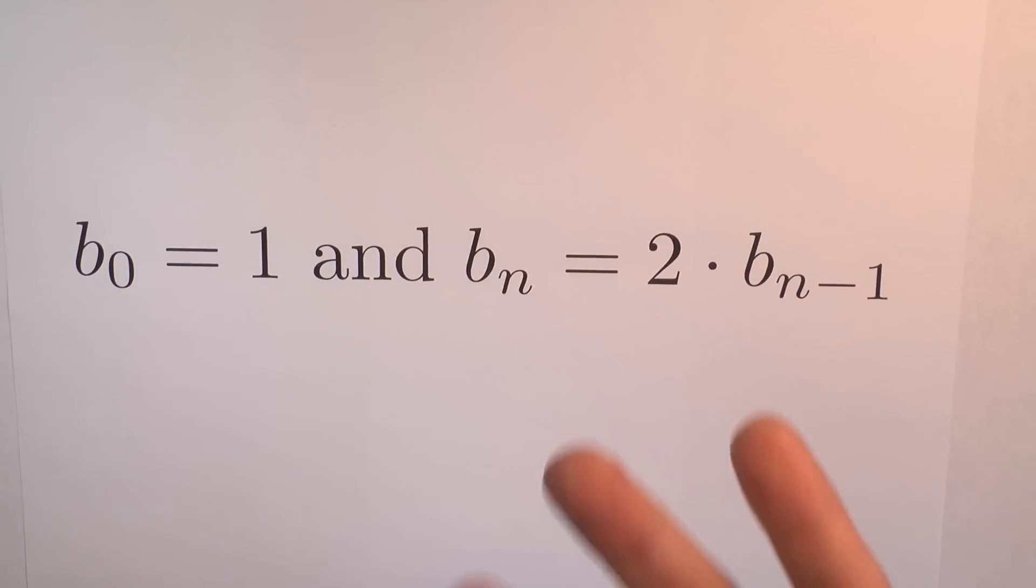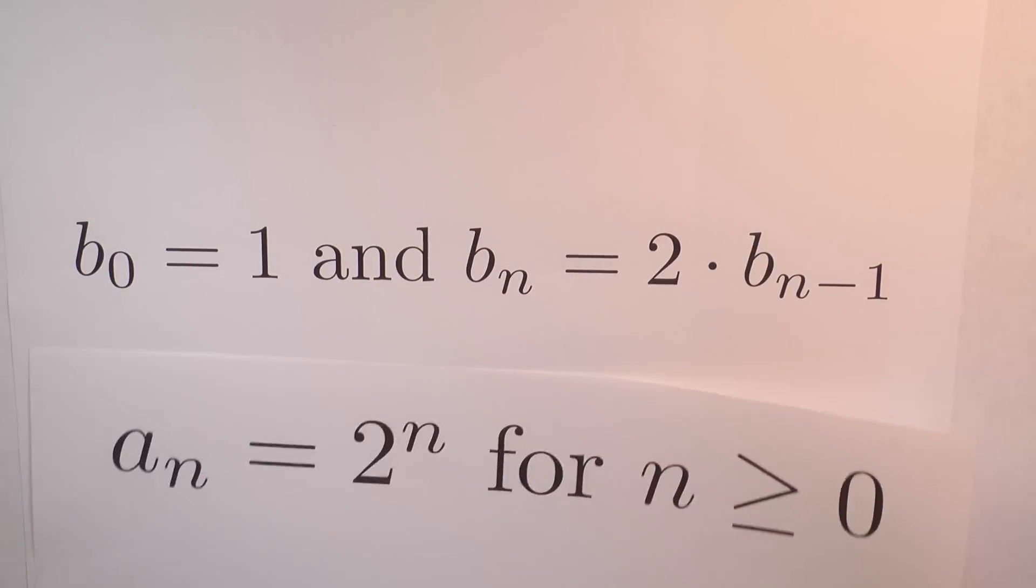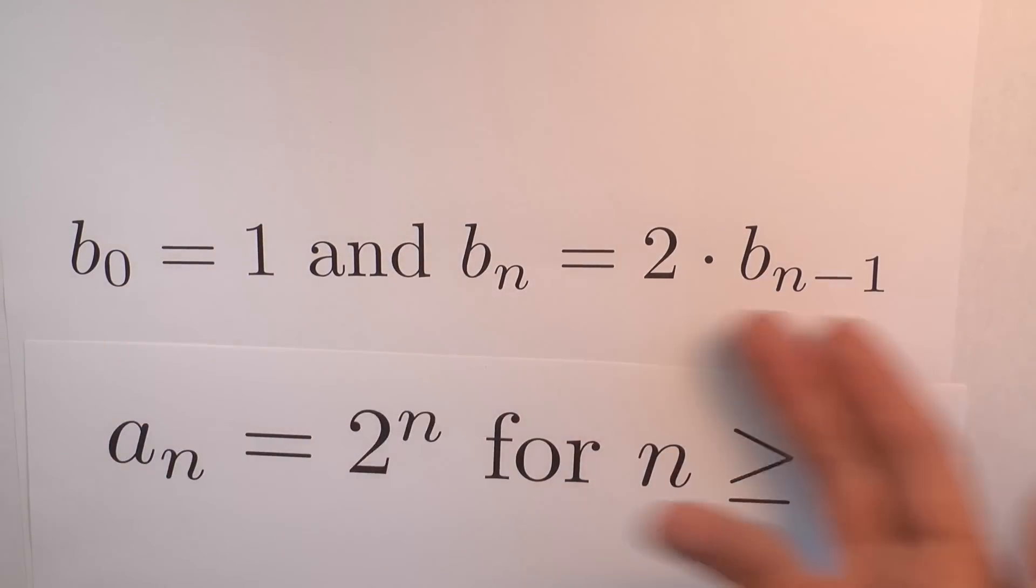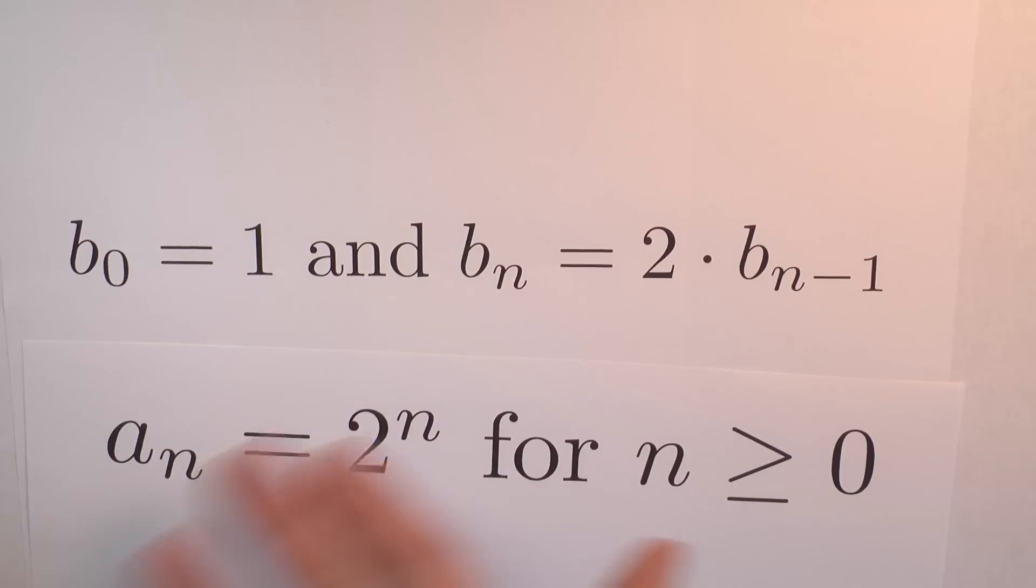These two sequences, A sub n and B sub n, they're the same. They're equal, but they're written down really differently, right? This sequence, B sub n, is defined recursively, and the sequence, A sub n, is just defined by a single formula in terms of n.